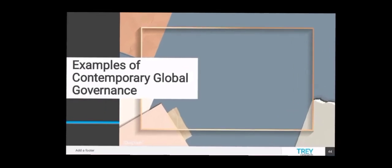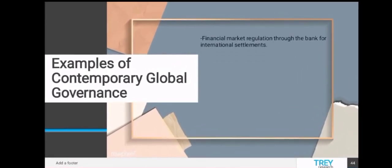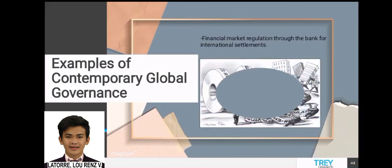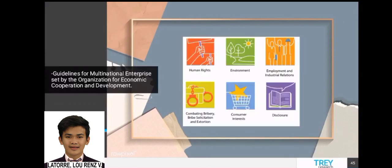Examples of contemporary global governance include financial market regulation through the Bank of International Settlements, and rules for multinational enterprises set by the Organization for Economic Cooperation and Development.